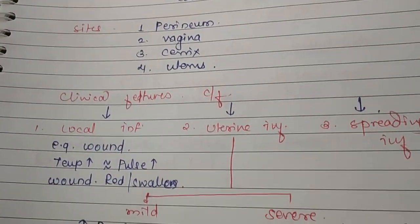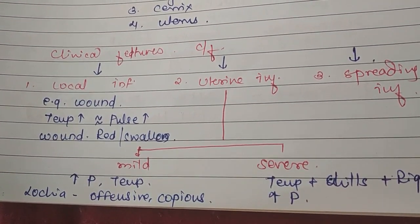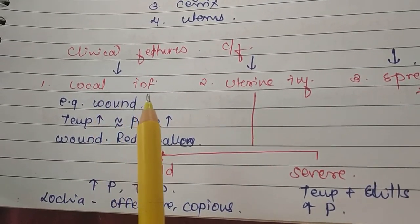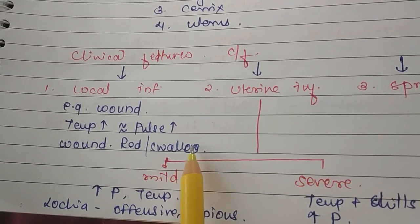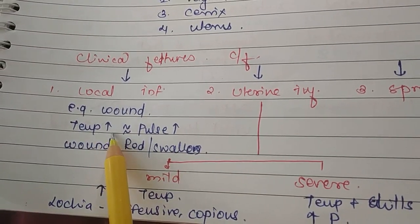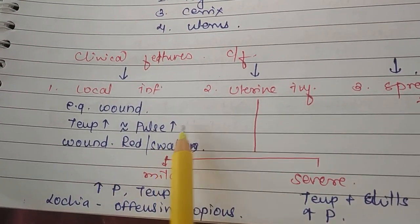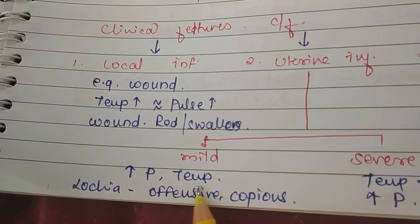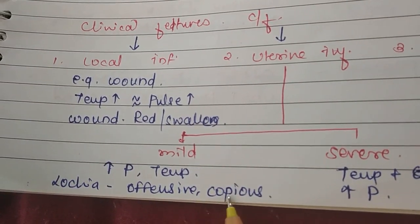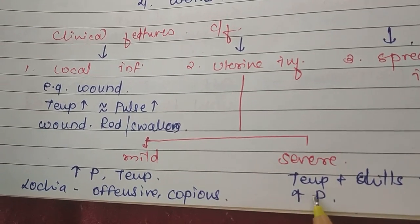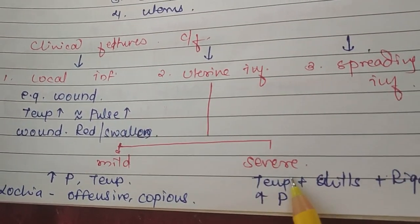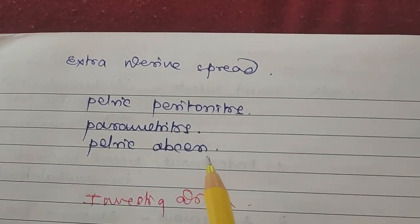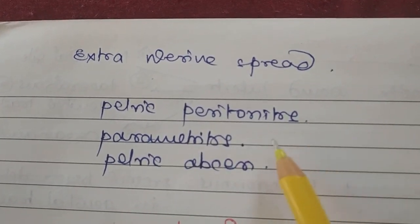The clinical features of puerperal sepsis: first is local infection, where the wound becomes red, swollen, and locally warm. With more infection, temperature rises along with an increased pulse rate. Second is uterine infection, divided into mild and severe. In mild cases, pulse rate and temperature are both increased with offensive and copious lochia. In severe cases, pulse rate increases but out of proportion to temperature, associated with chills and rigors. Third is extra-uterine spread: pelvic peritonitis, parametritis, and pelvic abscess.